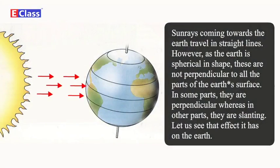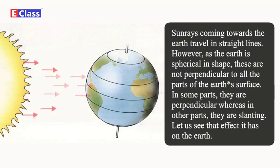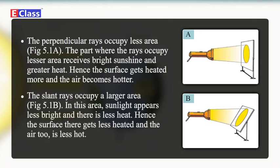Explanation: Sun rays coming towards the earth travel in straight lines. However, as the earth is spherical in shape, they are not perpendicular to all parts of the earth's surface — in some parts they are perpendicular, whereas in other parts they are slanting. The perpendicular rays occupy less area, as shown in figure 5.1A. The part where rays occupy lesser area receives bright sunlight and greater heat, so the surface gets heated more and the air becomes hotter. The slant rays occupy a larger area, as shown in figure 5.1B — sunlight appears less bright and there is less heat.